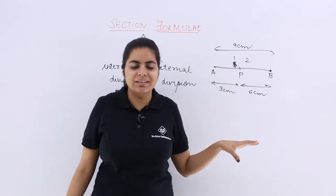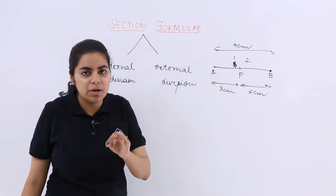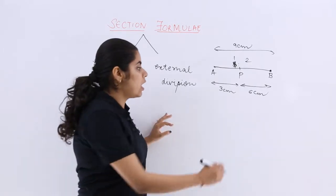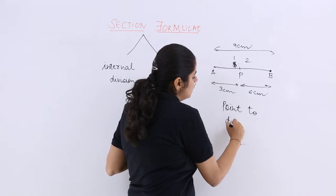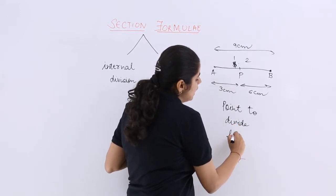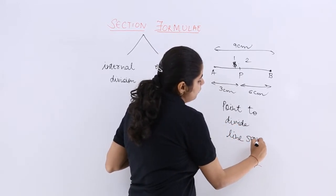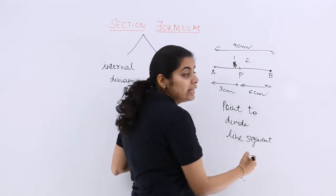Now that is very clear that what we are doing is we are basically using a point to divide a line segment in a given ratio.